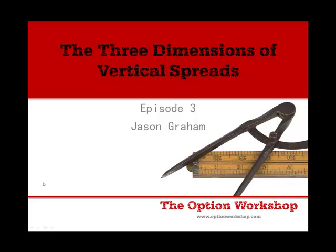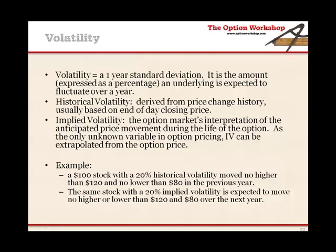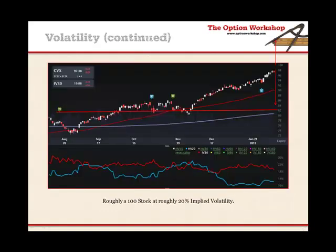Let's get into volatility. First, some very simple definitions. Volatility is basically a one-year standard deviation — the amount the stock is expected to move over a year. If I look at a $100 stock here, this is Chevron, what we're saying is that if it's got a 20% volatility, we anticipate this stock is going to move between $80 and $120. That's our standard deviation — we're saying the stock has a certain range that it's going to fluctuate in.